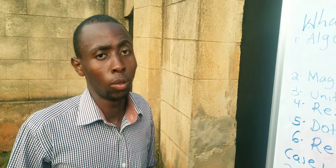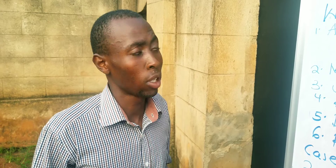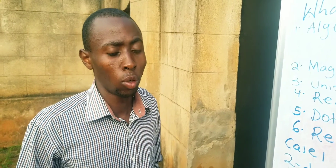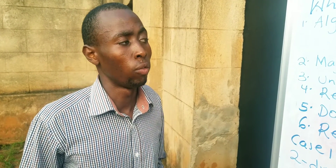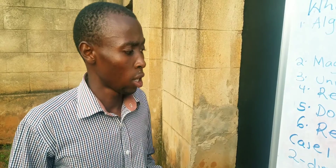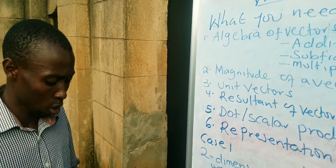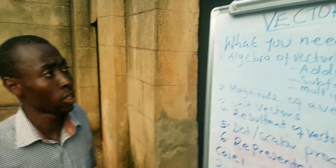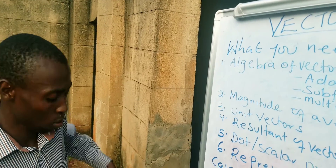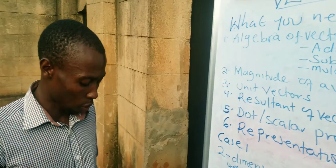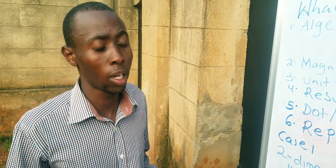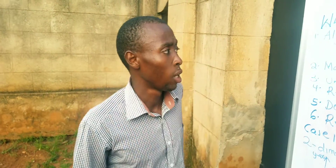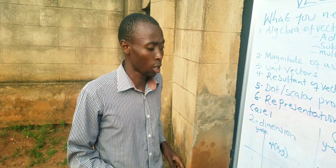Hello everyone, today we are going to be discussing our first topic in mechanics which is vectors. This is a continuation of the work you covered in O-level, and here we are going to introduce ourselves to what we need to know in vectors at A-level. At O-level you were introduced to vectors and dealt with them — you wrote down the definition of vectors as a quantity which has both magnitude and direction.